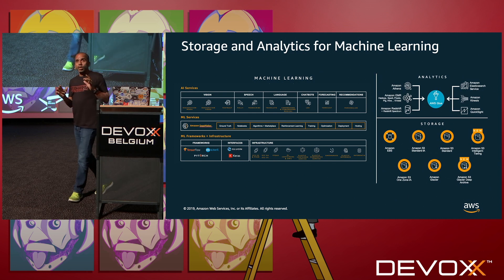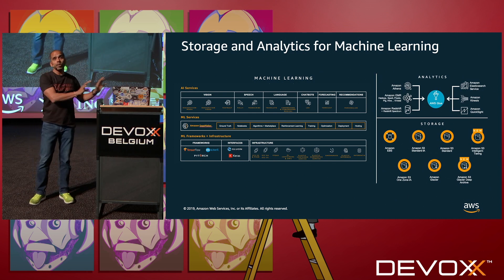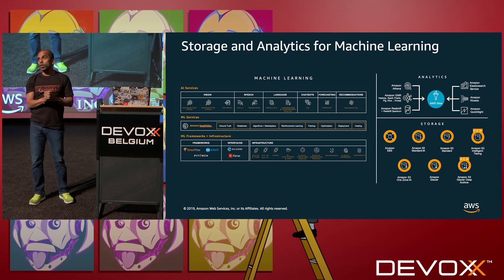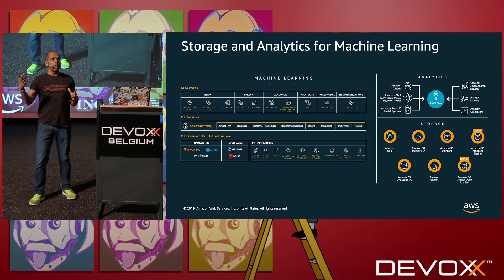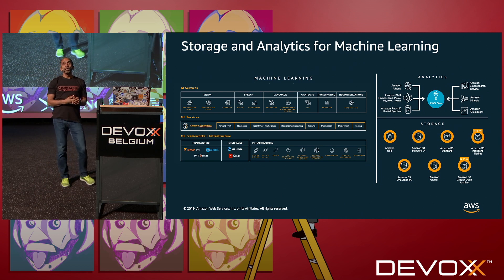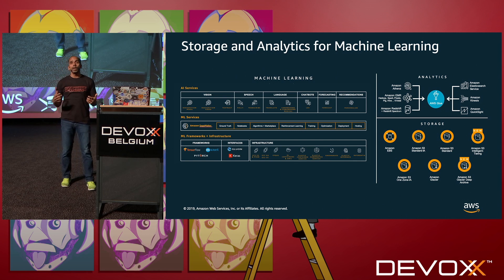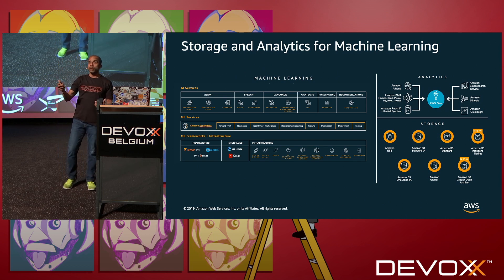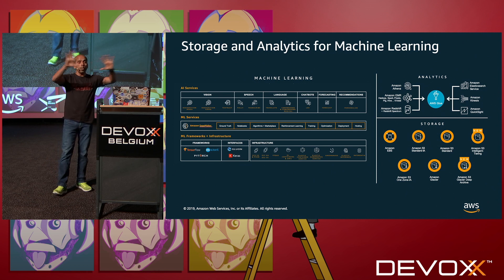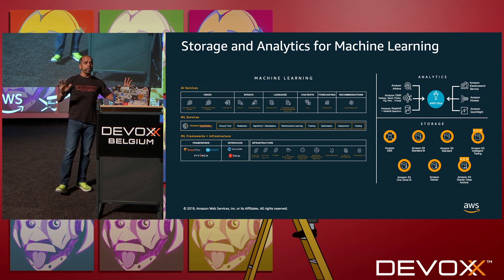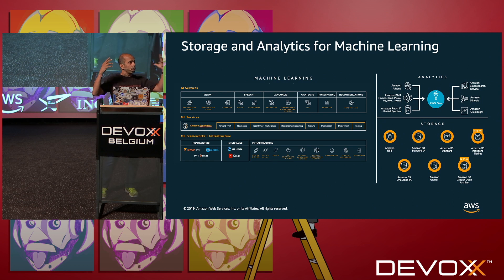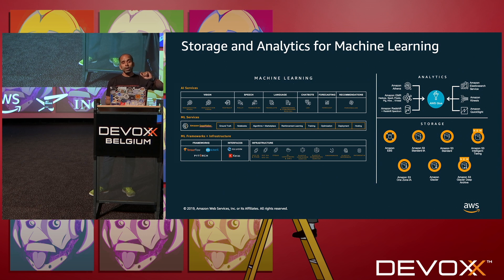When you think about machine learning, it's not just about thinking about your frameworks — that's one aspect. You also have to think about your storage and analytics capability. You want to be able to do high throughput, low latency storage, store that data, and perform real-time analytics. So all that information is super critical. If you're thinking about your machine learning stack running in the cloud, that's the way to think about it. What we're going to focus on is the bottom layer on a very specific aspect.